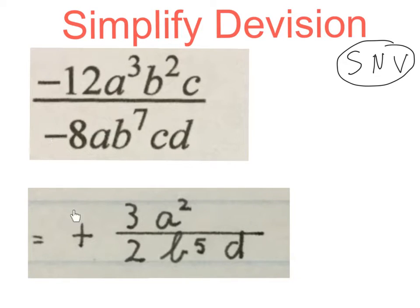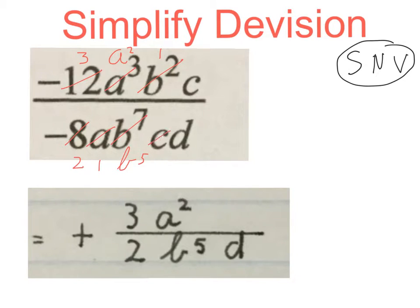A minus divided by a minus gives me a plus. Then 4 goes into 8 twice and 4 goes into 12 three times. We cancel the smallest A first, put the 1, cancel the A up here and we'll have A squared remaining. We cancel the smallest B first, put the 1 over there, and we get B to the power of 4 and 5 down here. Cancel the C, it goes in once each side. At the top we have 3A squared, and at the bottom we have 2B to the power of 5 and that D.